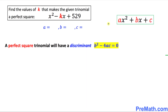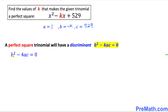Let's compare this trinomial with the standard form of the quadratic expression. We find that a is equal to 1, b is equal to negative k, and c is equal to positive 529. So let's calculate b squared minus 4ac. Since b is negative k, we take the square of that: negative k squared, minus 4 times a which is 1 times c which is 529, and we set it equal to 0.